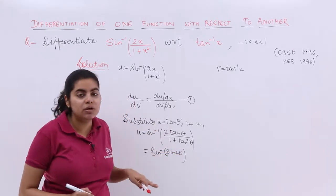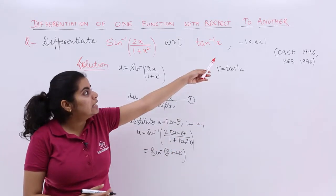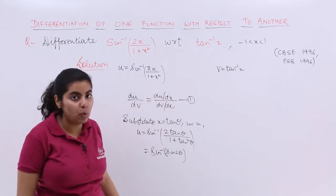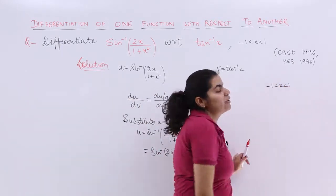Now sin and sin inverse should be cancelling. But can they cancel? That is clear from the condition imposed. Let's look at it again. It says minus 1 to 1 is where x lies.